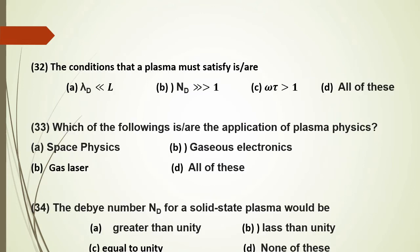The three conditions that a plasma must satisfy are: (1) the Debye length lambda_D must be much less than the dimension of the system L; (2) the number of particles in the Debye sphere must be greater than 1; and (3) omega times tau must be greater than 1.